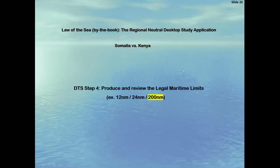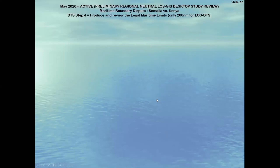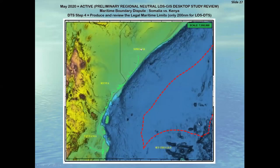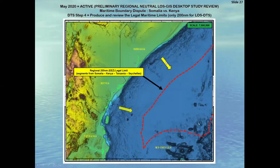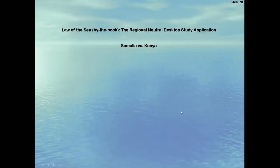Utilizing those baselines we've analyzed: step four — produce and review the legal limits. We're only going to do the 200 mile for the desktop study area. Looking at our desktop study area, from all those baselines, Somalia will produce 200 miles for their EEZ; Kenya 200 miles; Tanzania 200 miles; and from the Seychelles as well. This red line is defining our 200-mile EEZ. We now have our 200 mile, and the focus is going to be what is EEZ waters and eventually what is the extended continental shelf (ECS) waters.